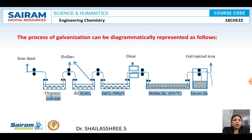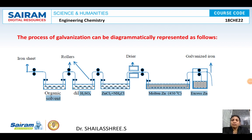Then it is treated with molten zinc kept at a temperature of around 430 to 470 degrees. After the process is over, the excess zinc present on the surface of the metal is removed by passing it between two rollers to get an even surface coating. So once again — anodic metal coating is when the base metal iron is coated with any metal present above it in the electrochemical series.